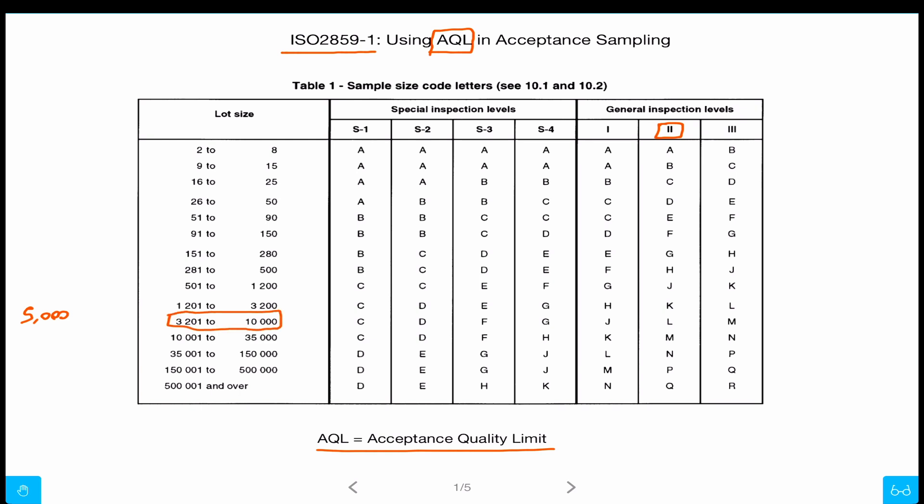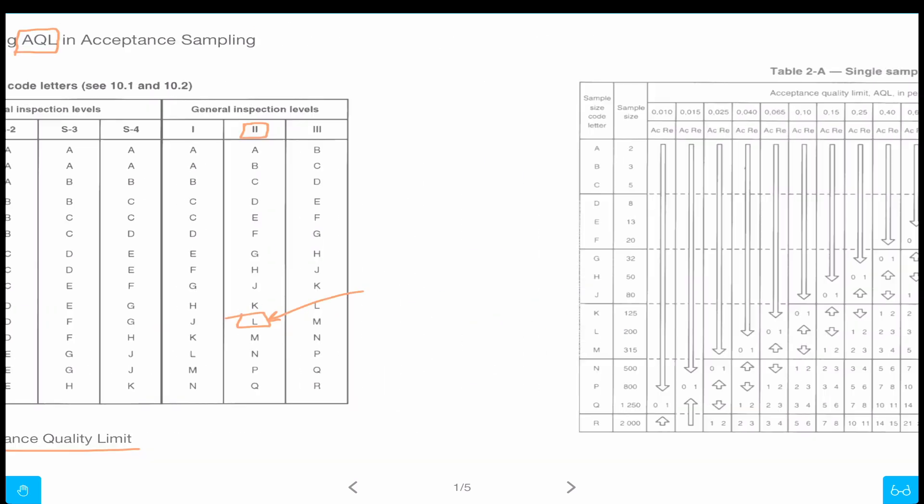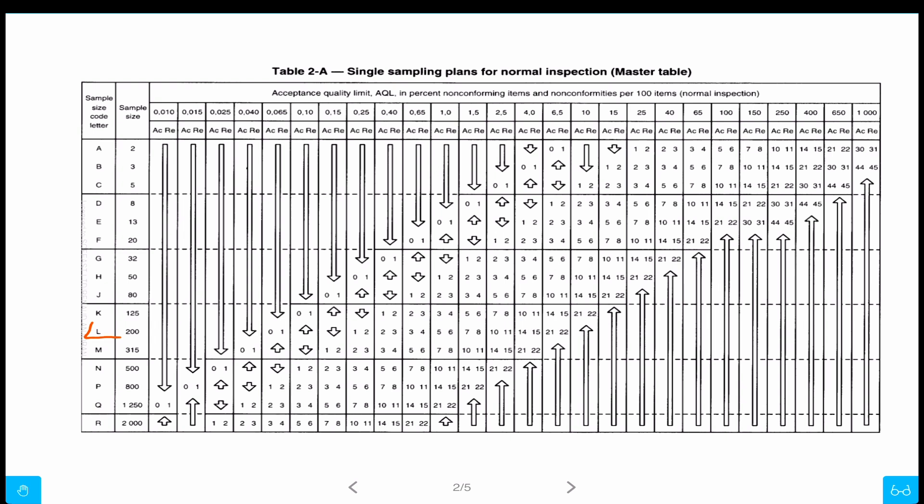So we're here and that gives us letter L. This is just the first table, then you go to the next one. L gives you 200 pieces to pick out of the 5000, and let's say you have an AQL limit of 1.0. So this will bring us here: five and six.